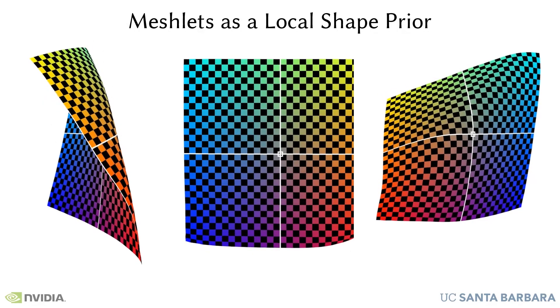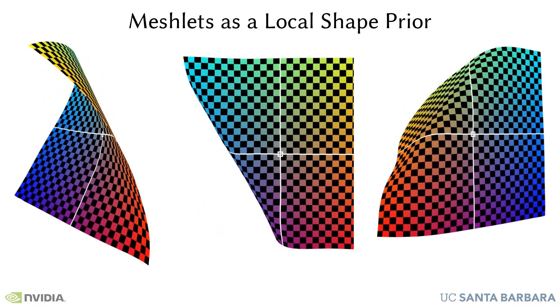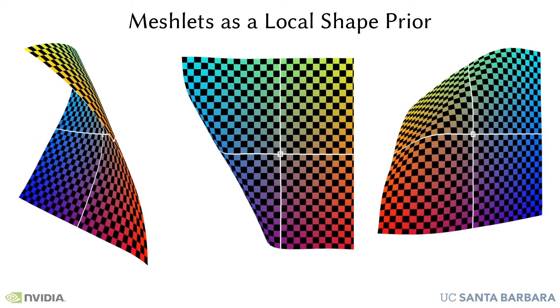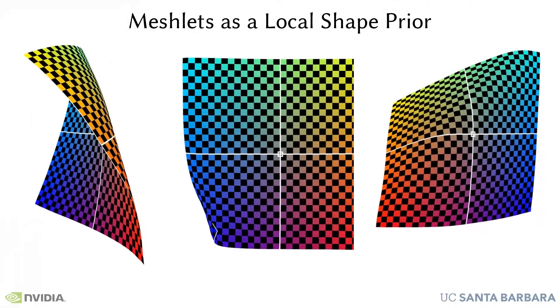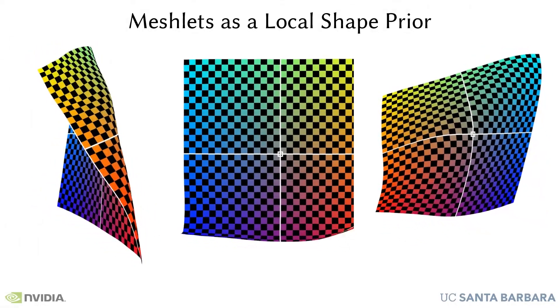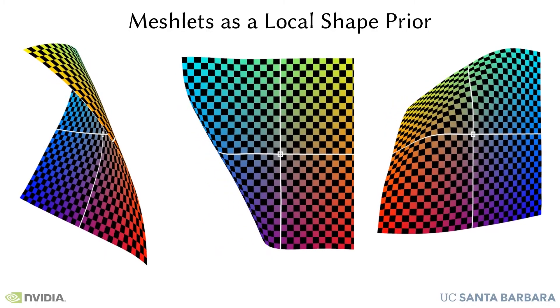Instead of learning priors at the object level, we propose to learn them locally. We introduce meshlets: small patches of mesh that capture local features like corners or edges.